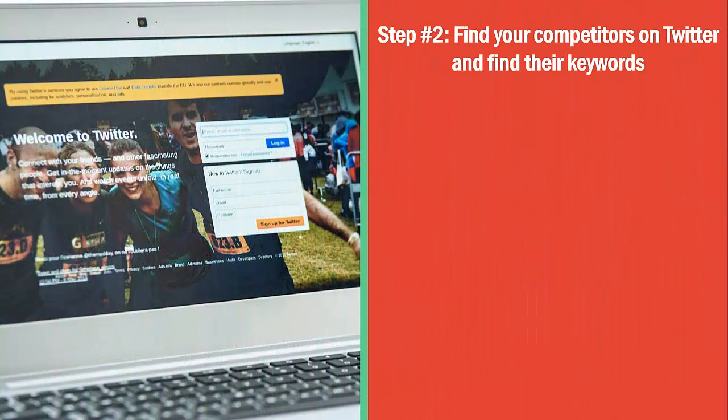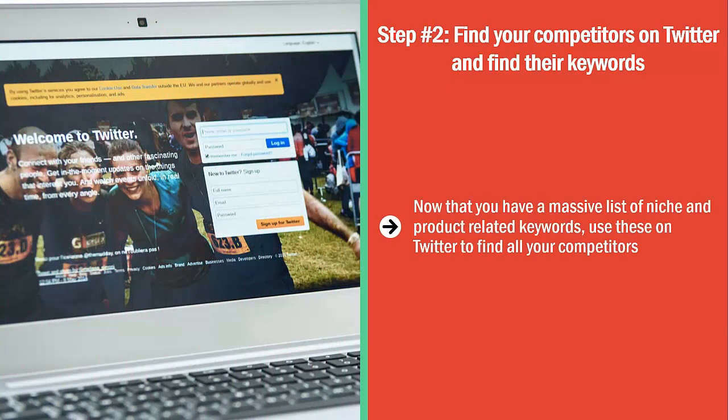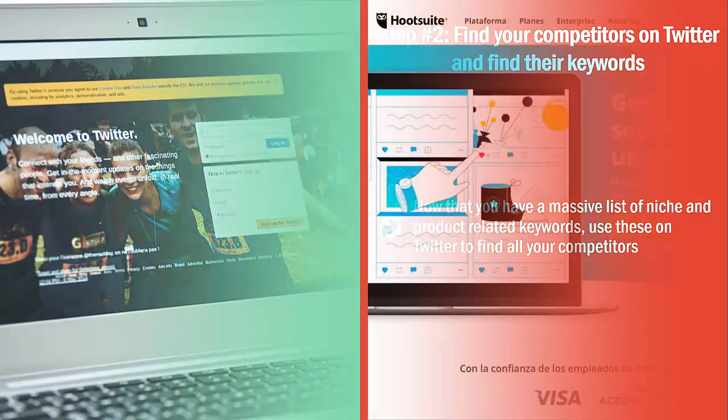Step number two: find your competitors on Twitter and find their keywords. Now that you have a massive list of niche and product-related keywords, use these on Twitter to find all your competitors. Get as many of them as possible. Next, look at the hashtags that they normally use with their posts and copy and paste them into a file. Get as many of them as possible.